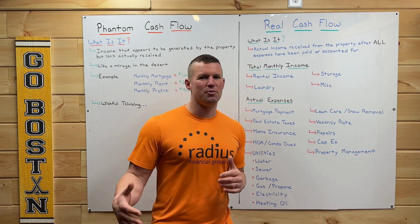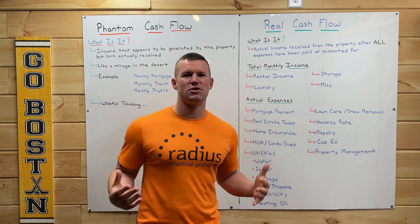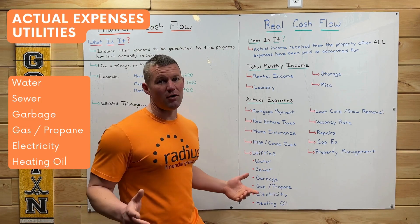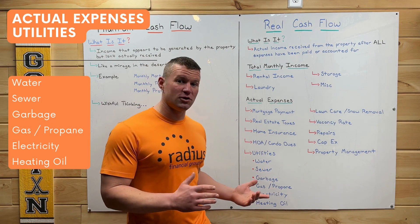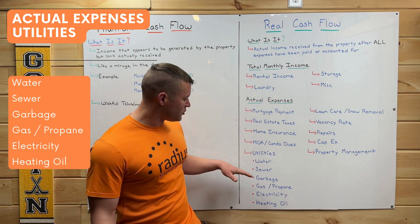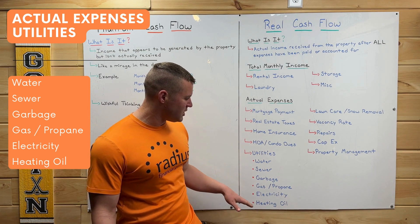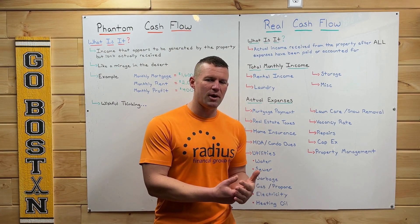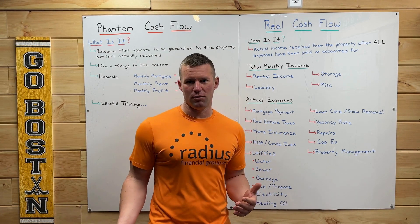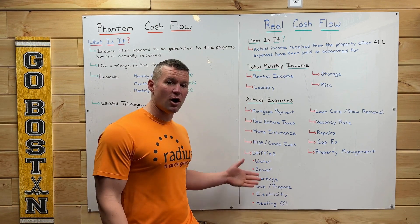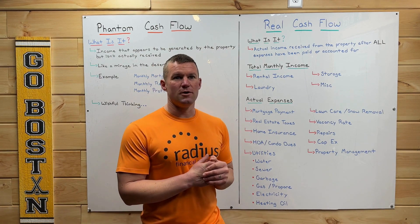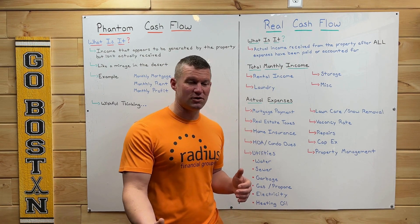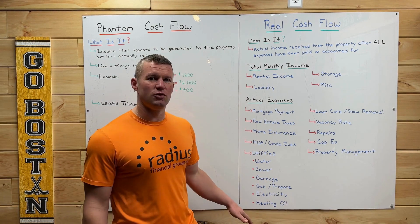But a lot of times I don't hear people going into the other expenses, such as utilities. You may not have all of these, but they're good to account for: water, sewer, garbage, gas or propane, electricity, and heating oil. You need to think about who's going to be paying that — the landlord or the tenant? And if it's a multifamily property, are the utilities already subdivided so you can pass that expense on to the tenant?